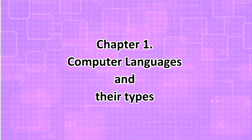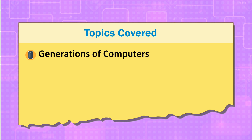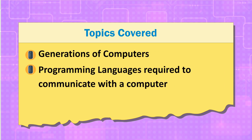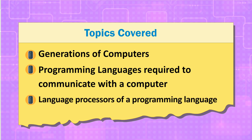Chapter 1: Computer Languages and Their Types. Topics covered include: Generations of Computers, Programming Languages Required to Communicate with a Computer, and the Processes of a Programming Language.